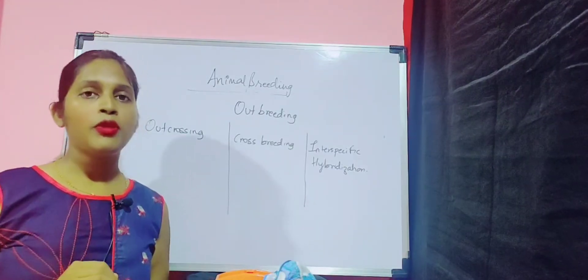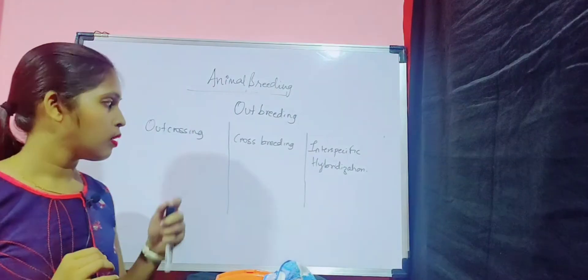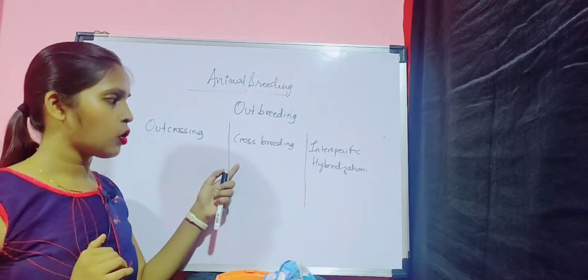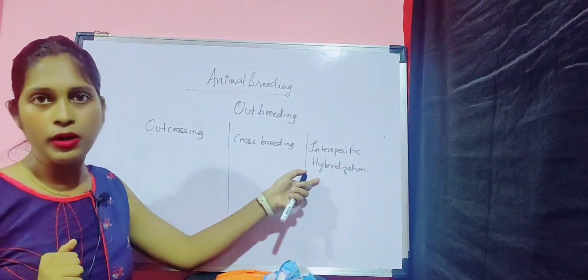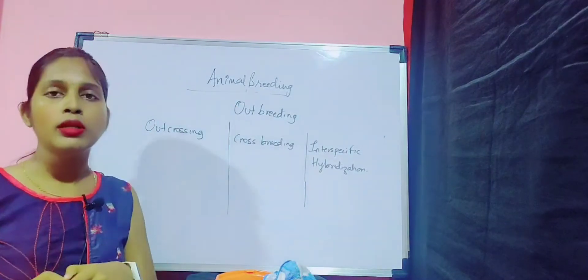So there are three different types of outbreeding. The first is called outcrossing, crossbreeding and interspecific hybridization. Let us learn about it in detail.